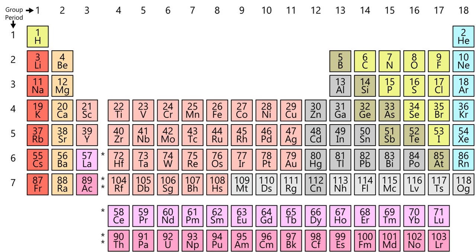Thus, the most metallic elements, such as cesium and francium, are found at the bottom left of traditional periodic tables, and the most non-metallic elements at the top right. The combination of horizontal and vertical trends in metallic character explains the stair-shaped dividing line between metals and non-metals found on some periodic tables, and the practice of sometimes categorizing several elements adjacent to that line, or elements adjacent to those elements, as metalloids.